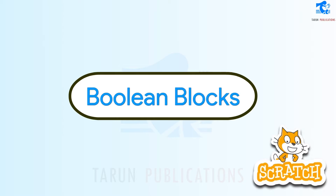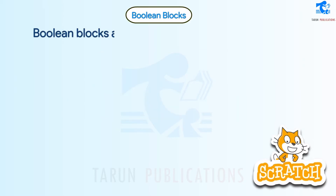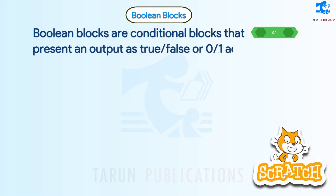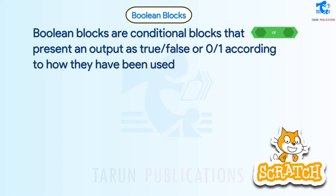Boolean Blocks are conditional blocks that present an output as true or false, or 0 and 1, according to how they have been used in the script.